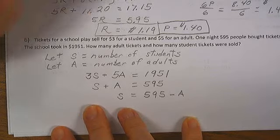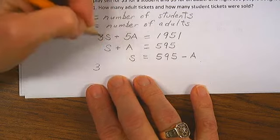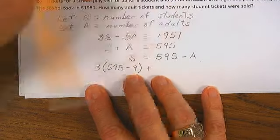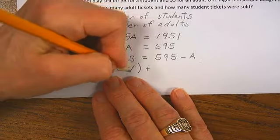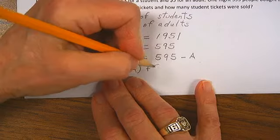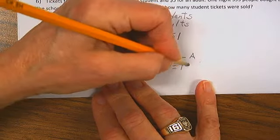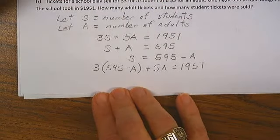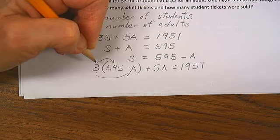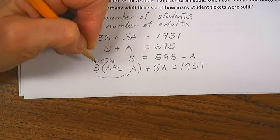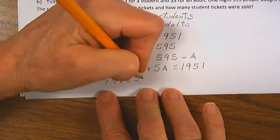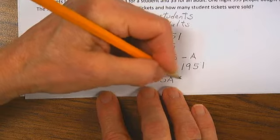Now we can solve the problem. 3 times the number of students, and we know the number of students - we don't know the number, but we know that they were everybody who wasn't an adult, plus 5 times the number of adults is equal to $1,951. So what's next? Now we distribute the 3, so we have 595 multiplied times 3 is 1,785 minus 3A plus 5A equals 1951.